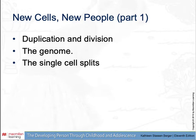New cells, new people. Duplication and division begins within hours after conception. The 23 pairs of chromosomes carrying all the genes duplicate, forming two complete sets of the genome. Two sets move toward opposite sides of the zygote, and the single cell splits neatly down the middle into two cells, each containing the original genetic code. Two cells duplicate and divide, becoming four, which then duplicate and divide, becoming eight, and so on.